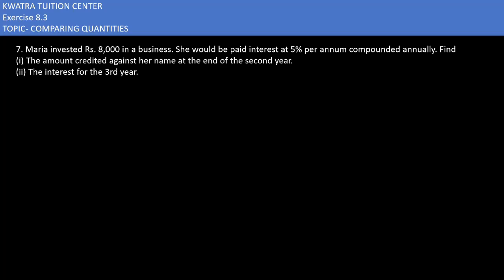Now we'll be starting with the seventh one. It says Maria invested eight thousand in a business. She would be paid interest at five percent per annum compounded annually. Find the amount credited against her name at the end of the second year. So the principle is eight thousand rupees, the rate is five percent, and the time is two years, so n is equal to two years.